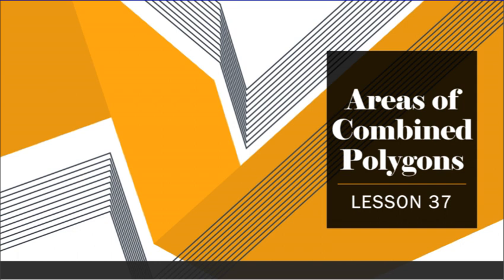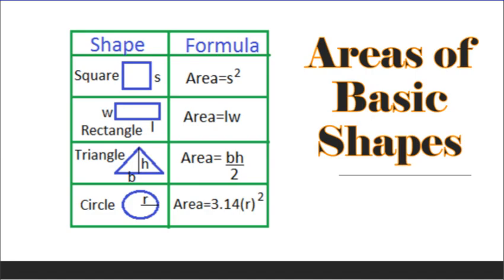Lesson 37: Areas of Combined Polygons. As a review, polygons are just multi-sided shapes, but they also have to be closed and they have to have straight lines.